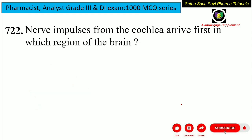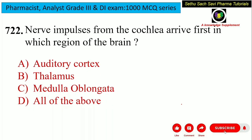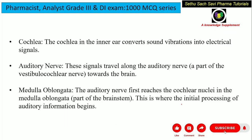Coming to the next question: nerve impulses from the cochlea arrive first in which region of the brain? Is it auditory cortex, thalamus, medulla oblongata, or all of the above? The cochlea is the inner ear, which converts sound vibrations into electrical signals. It is attached to the auditory nerve, and these electrical signals travel through the auditory nerve to the brain. In the brain, it first reaches the cochlear nuclei, which is present in the medulla oblongata.